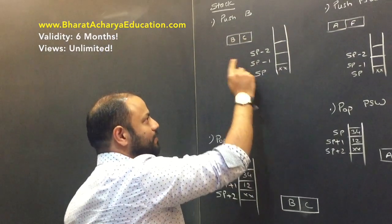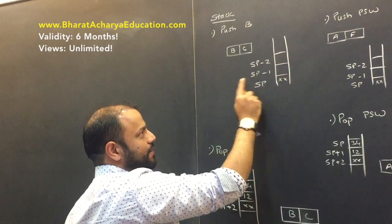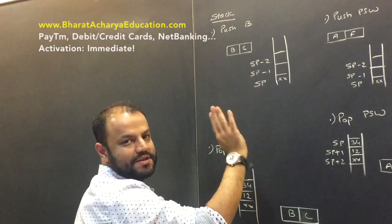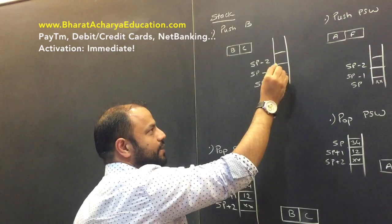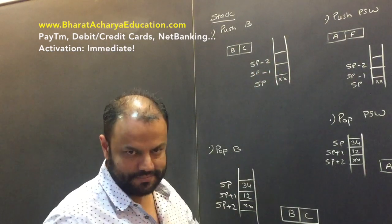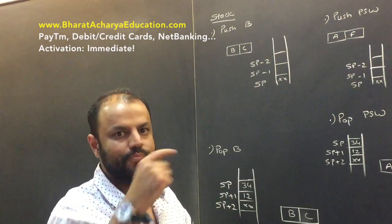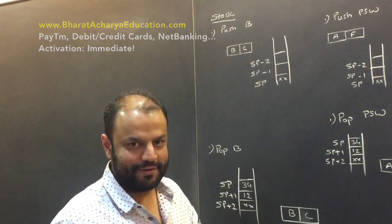The lower byte goes to the lower address, and the higher byte goes to the higher address. So you will get B at SP-1 and C at SP-2. B goes in first, sequentially.